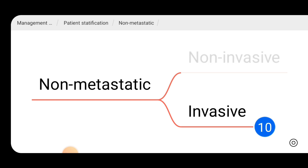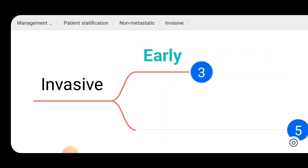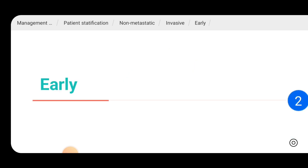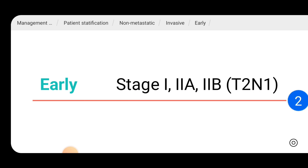In the non-metastatic group we can categorize patients as non-invasive or invasive. Non-invasive means usually ductal carcinoma in situ — the in-situ carcinomas. Then invasive carcinoma can be categorized as early or locally advanced breast carcinoma. To categorize the patient as early breast carcinoma, there is a staging classification.